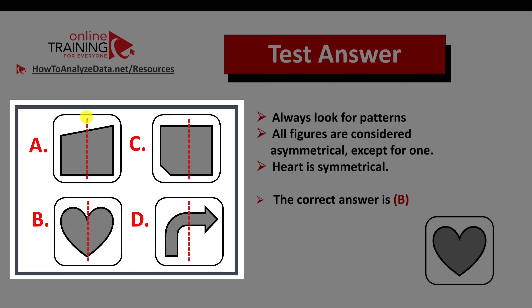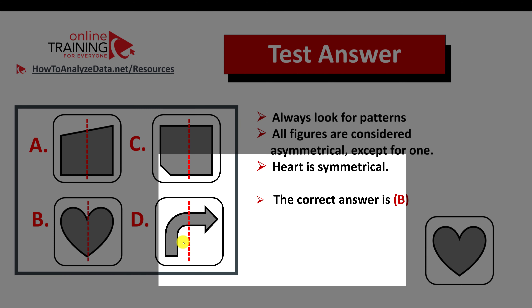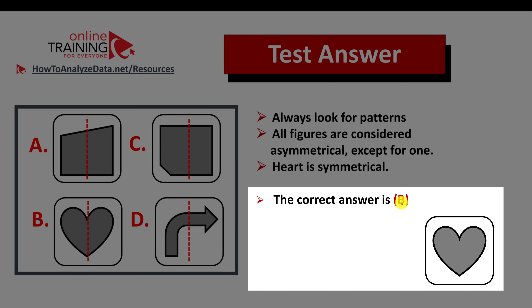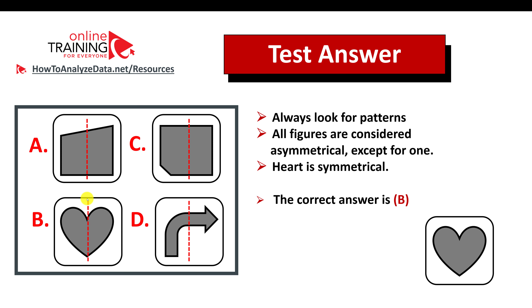All figures here are considered asymmetrical. Look at figure a: the part on the left of the line and the part on the right are different. The same is true for figures c and d. So figures a, c, and d are asymmetrical, meaning the correct choice is b, which is symmetrical.